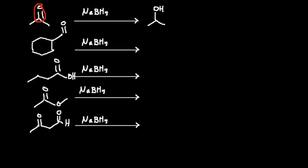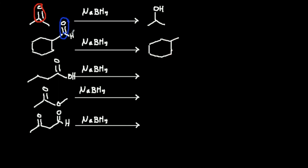The next molecule — the only relevant part is this carbonyl, a carbon double bonded to the oxygen. That functional group is an aldehyde. Sodium borohydride will reduce it, so we draw the carbon skeleton and then convert the carbon-oxygen double bond into an OH group. That would be the product of the second reduction.